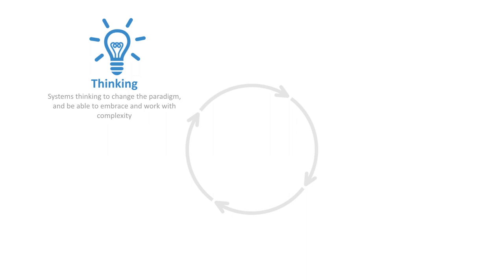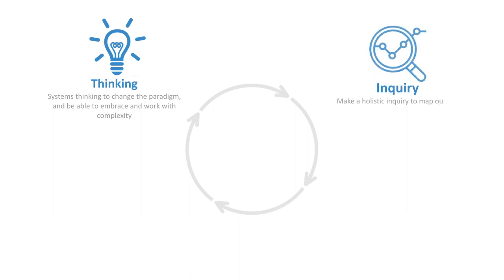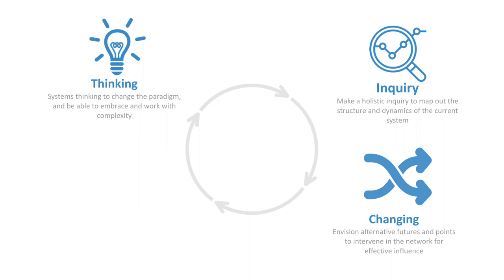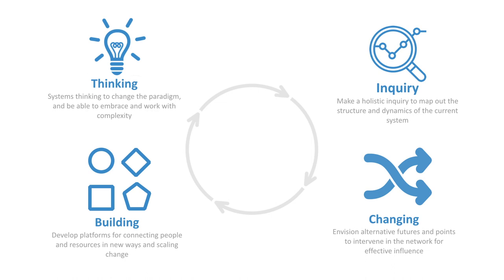The content is broken out into four main sections. Systems thinking is the first one — about trying to change the paradigm, looking at things differently in a more holistic way, and embracing complexity. The second section is on systems analysis and systems inquiry to gain a holistic understanding of the system and map it out. The third section deals with systems change: envisioning futures, points of intervention, and working with transition processes. The final section goes into systems building and systems entrepreneurship — developing platforms for connecting people and resources in new ways and developing innovation ecosystems.